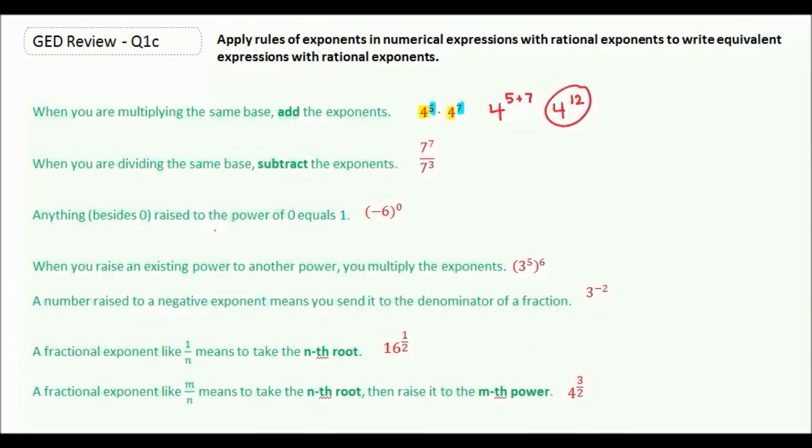When we're dividing the same base, we can subtract the exponents. So we have 7 to the 7th divided by 7 to the 3rd. Our base stays the same, but now we subtract our exponents, so our answer is 7 to the 4th.